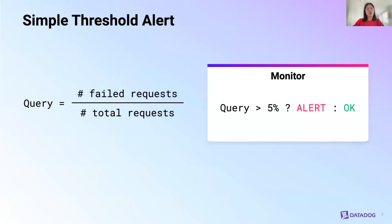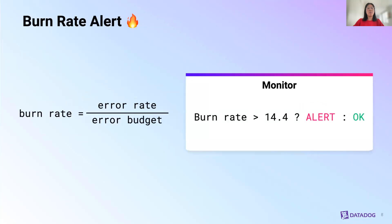Simple threshold alerts are simply a monitor that triggers based on a value. You can think of it as an error rate monitor. In this example, we have an alert that triggers when it exceeds 5% in error rate and resolves when it goes back to less than 5%.